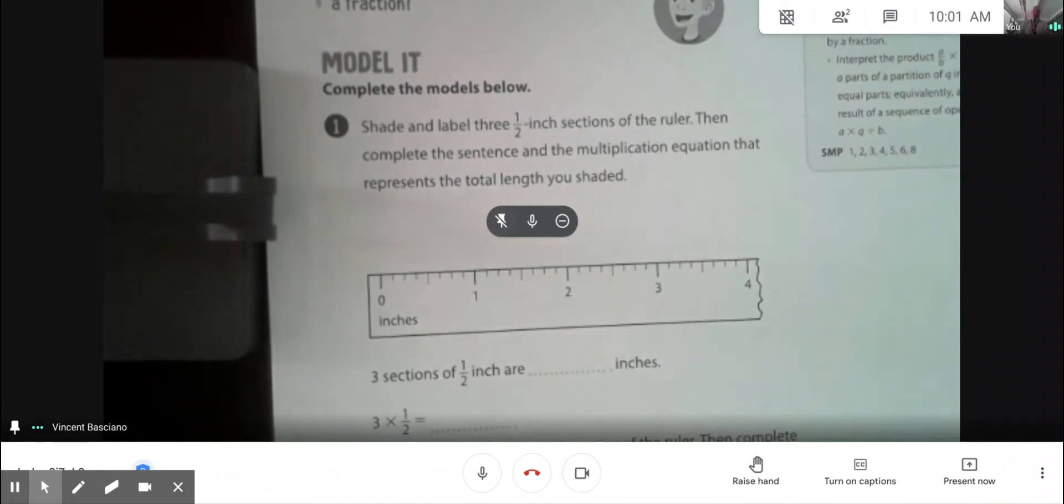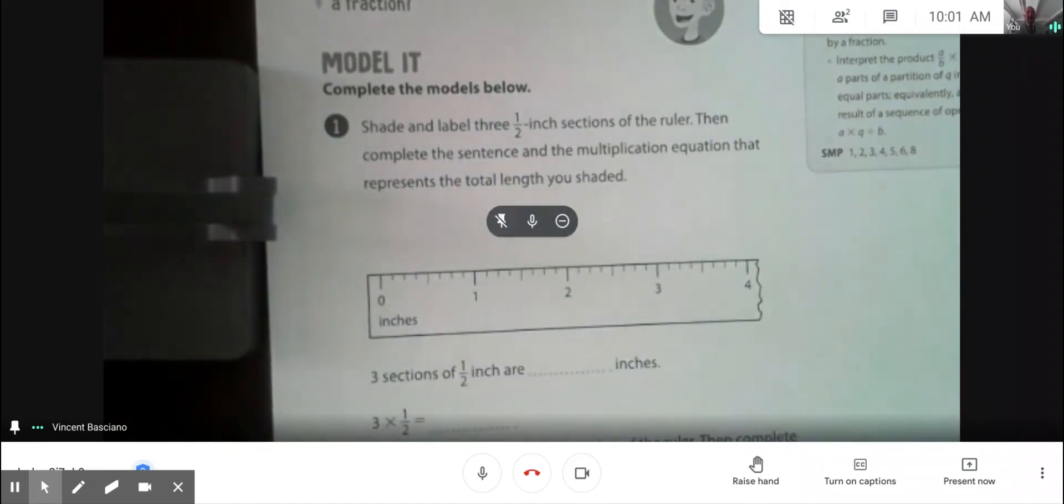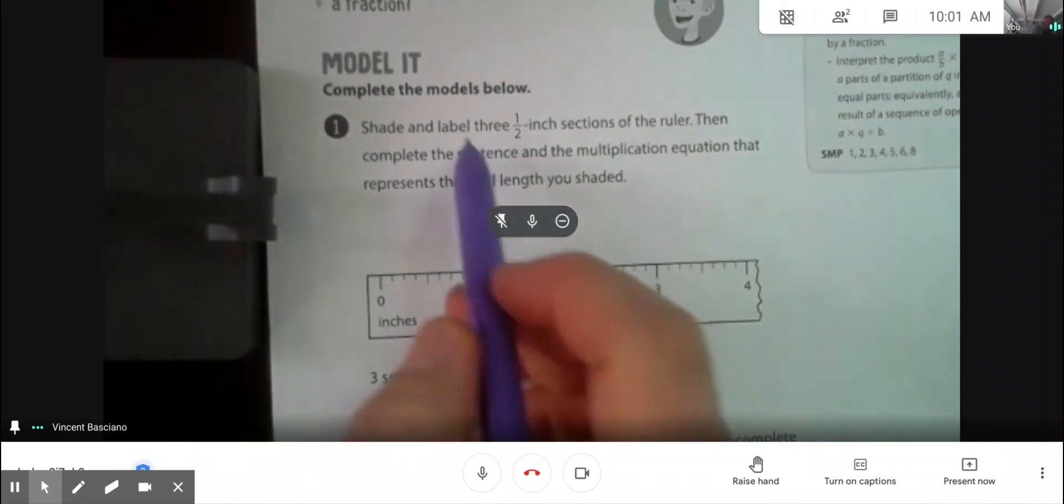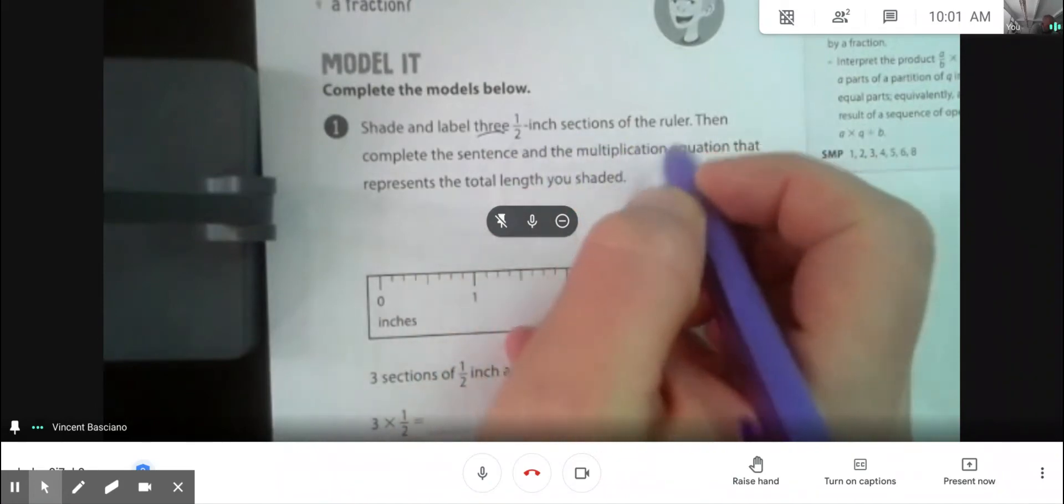There's two ways that we do multiplying fractions, right? The first way is written like this. And we're going to do exactly what it says. So please follow along with me and do this in your book. Shade and label three half-inch sections of the ruler.